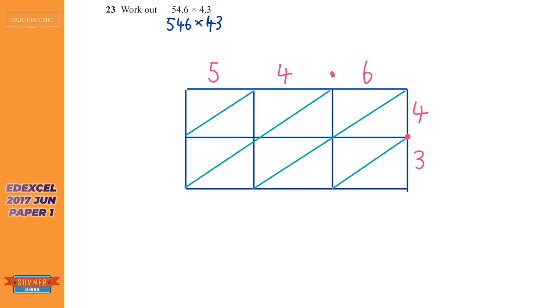Simple as that. And in each of the boxes we times the two numbers that are above it and to the right of it. So for this box here, it's going to be 5 times 4 is 20. So the 2 goes here and the 0 goes here. So 10s go at the top left, units go at the bottom right. So for this next box, it's going to be 4 times 4, which is 16. For this next box, it's going to be 6 times 4, which is 24. And for the bottom left box, 5 times 3 is 15. 4 times 3, which is 12. 6 times 3, which is 18.